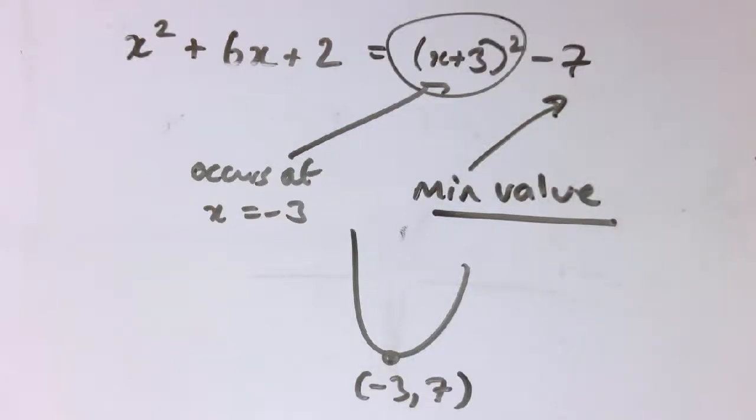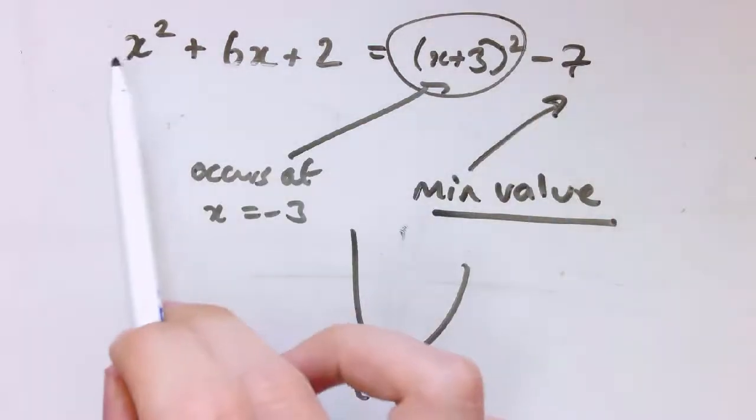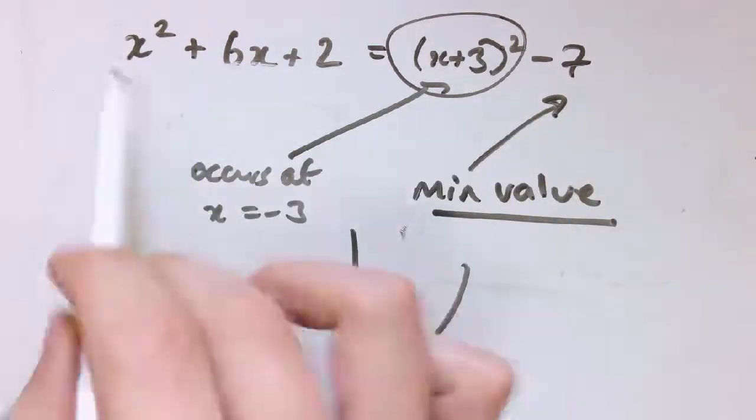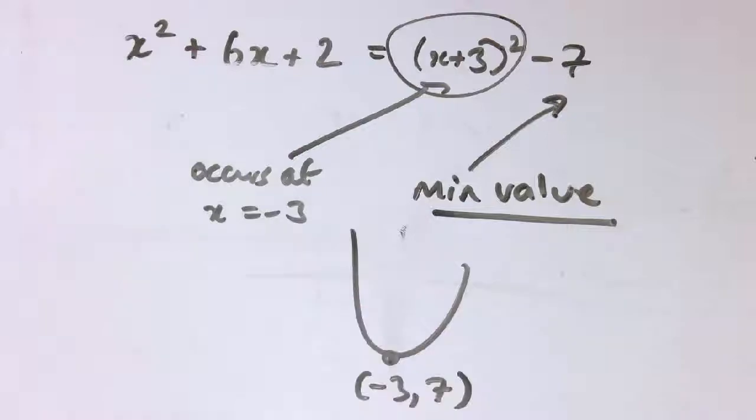So completed square form is really great. Lots of stuff we can do with it. In the next video, I'll show you completed square form for non-monic quadratics, i.e., you know, what do I do if I put a number in front of the x squared? How do we change our answers?